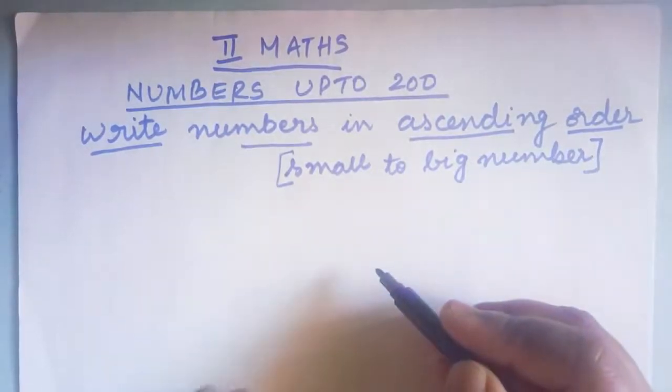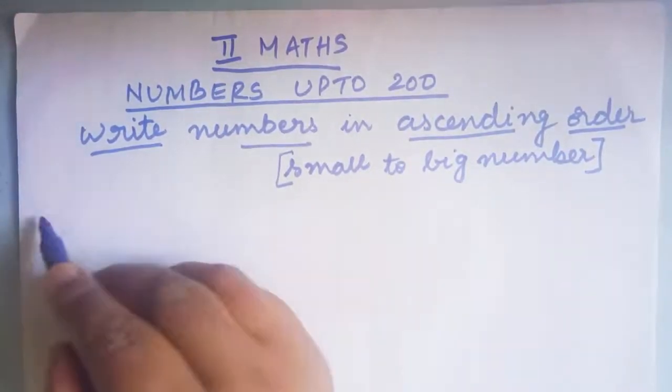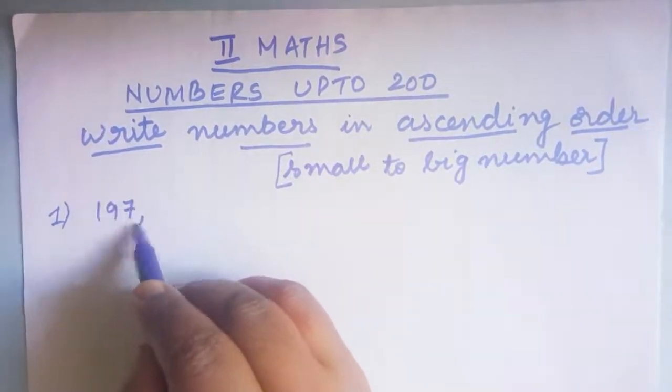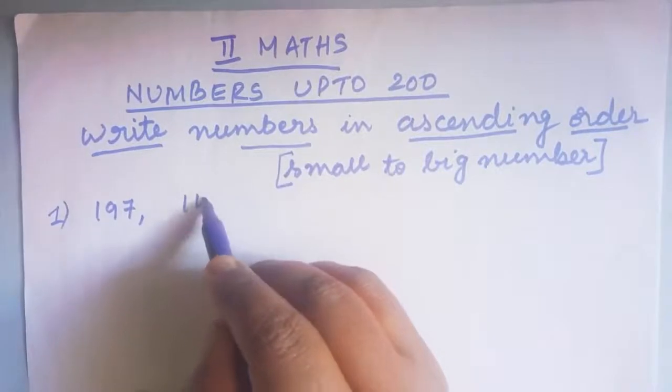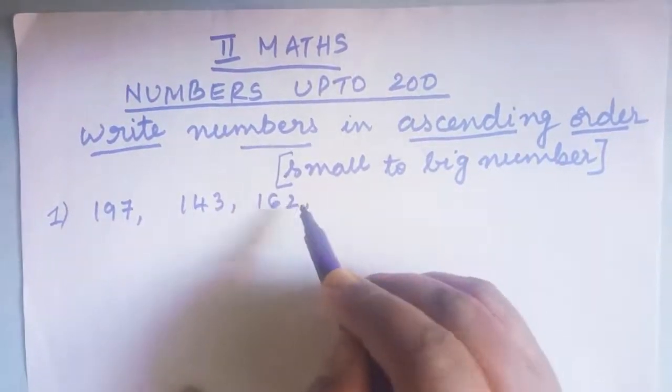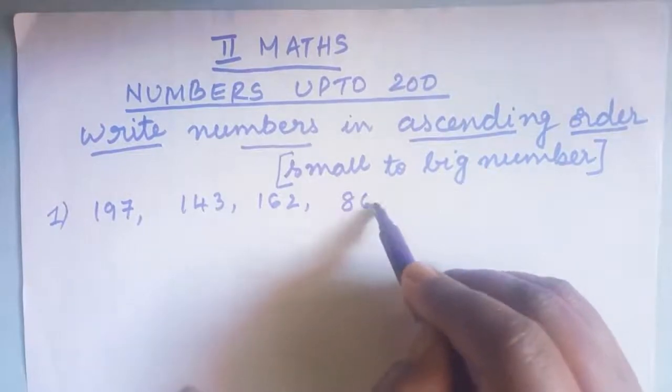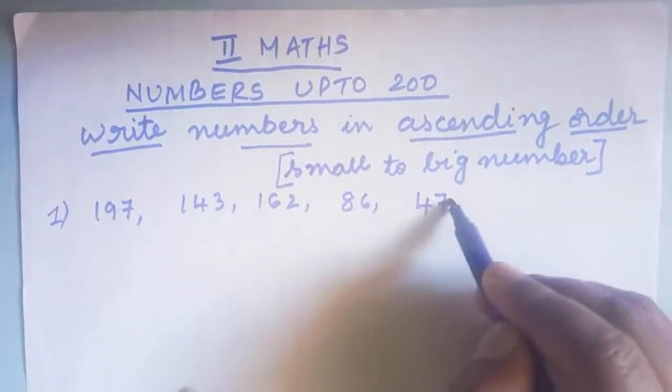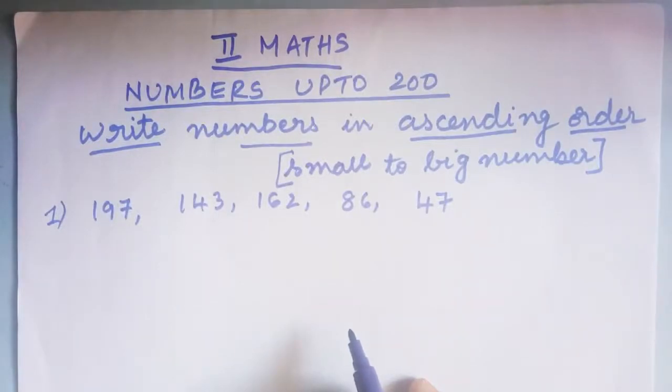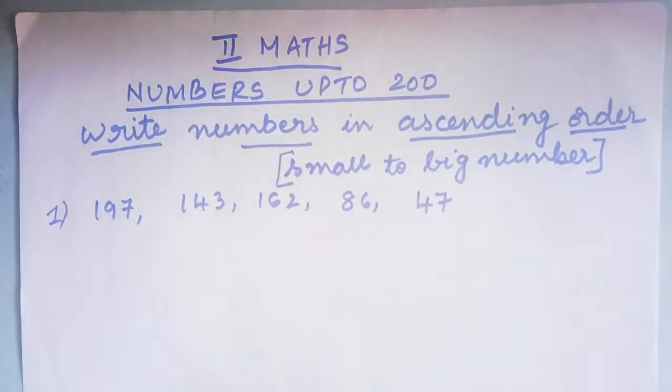Now let us try to do some sums. Children, let me write the first one. Here I have 197, 143, 162, 86, and 47. These are the 5 numbers we have here, and we have to arrange all these 5 numbers.